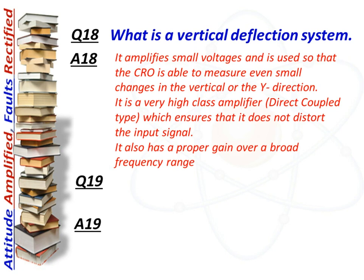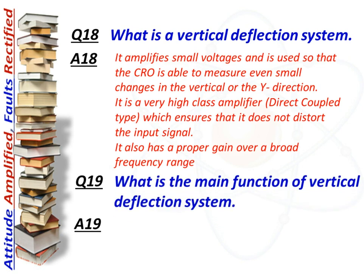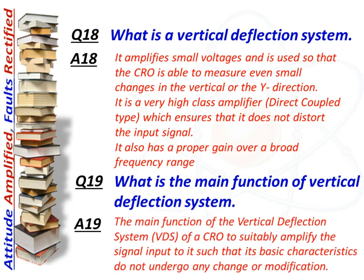It also has proper gain over a broad frequency range. Next question: what is the main function of the vertical deflection system? Answer: The main function of the vertical deflection system of a CRO is to suitably amplify the signal input to it such that its basic characteristics do not undergo any changes or modifications.